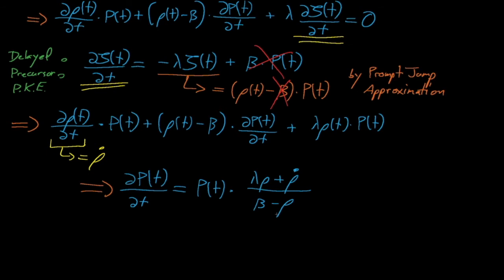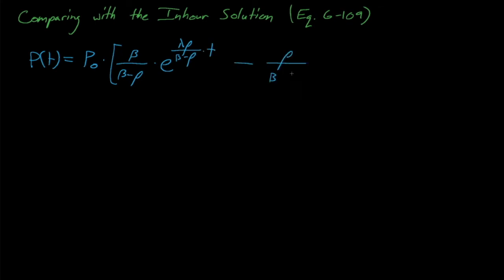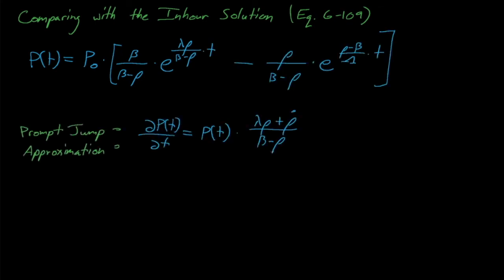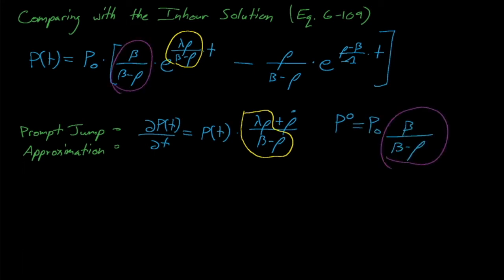This equation should look a little familiar. If we take a look at equation 6109, which was the solution to the in-hour equation for a constant reactivity insertion — also known as a step insertion — we see that one of the exponential terms in this equation contains this lambda*rho divided by beta minus rho term. Note that because the step insertion contains a constant reactivity, rho-dot is equal to zero. So if we were to solve our prompt jump approximation equation, we would get an exponential function with the same exponential coefficient as our in-hour equation solution. Note also that the coefficient on the front of this exponential term in the in-hour equation solution is equal to the adjusted initial power according to the prompt jump approximation. So we see that the prompt jump approximation, through entirely different means and assumptions, arrives at the same solution for power during a transient as the in-hour equation solution.